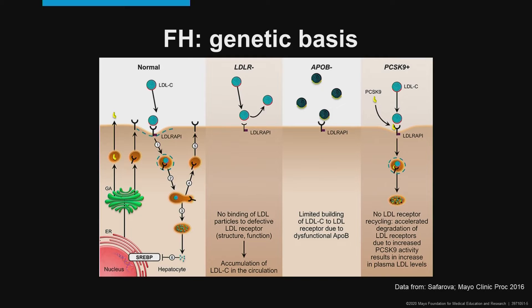Similar effect is observed when there's a defect in the apolipoprotein B, which carries LDL cholesterol. Such variants may impair the ability of the apoprotein B to bind to LDL receptor, resulting in elevated LDL cholesterol. These are both loss of function variants, but there's an interesting gain of function variant in PCSK9 that can lead to familial hypercholesterolemia.